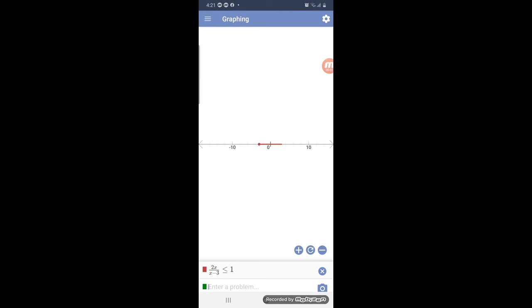Hey guys, here's the graph for the equation 2x over x minus 3 less than 1. As you can see, it doesn't go past negative 3, and also it doesn't go past positive 3. So this is where it stops.